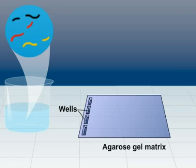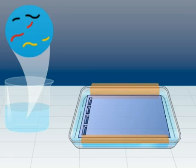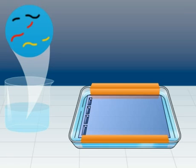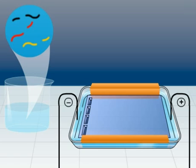The gel matrix is submerged into a tank filled with salt solution and hooked up to positive and negative electrodes.